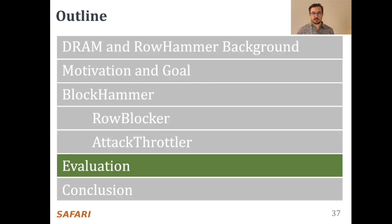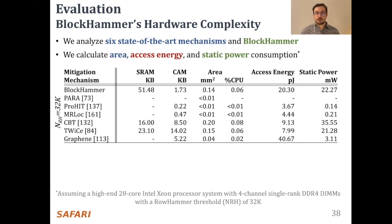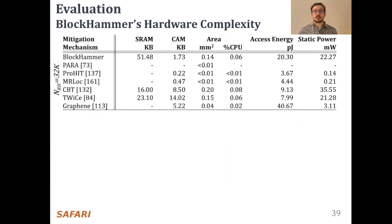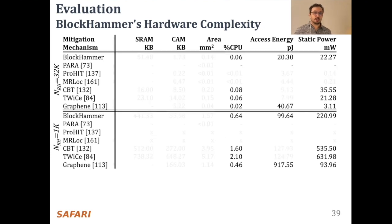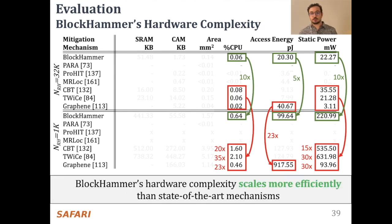I will share the key evaluation results next. We analyze and compare Block Hammer's hardware complexity with six state-of-the-art row hammer mitigation mechanisms: PARA, PROHIT, MRLOC, CBT, TWICE, and GRAPHN. We calculate hardware complexity in terms of area, excess energy, and static power consumption for a row hammer threshold of 32K, which is a realistic assumption for current DRAM chips. We observe that Block Hammer is low-cost and competitive with state-of-the-art mechanisms. To understand how hardware complexity scales with worsening row hammer vulnerability, we repeat the analysis for a row hammer threshold of 1K, projected for future DRAM chips. We observe that Block Hammer's hardware complexity scales more efficiently than state-of-the-art row hammer mitigation mechanisms.